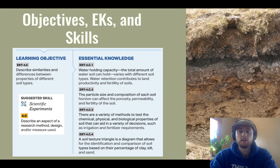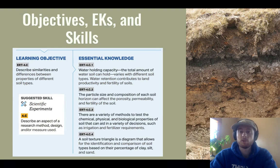Let's take a look at our objectives. Our objective today is to be able to describe the similarities and differences between properties of different soil types. The knowledge we need is that all soils are made up of sand, silt, and clay, and the different sizes of these particles determine how the soil holds water and nutrients. We'll learn to classify different soils based on their texture, understand factors that affect water holding capacity, and learn about basic tests that measure soil fertility. Our suggested science skill is to describe an aspect of a research method or investigation.